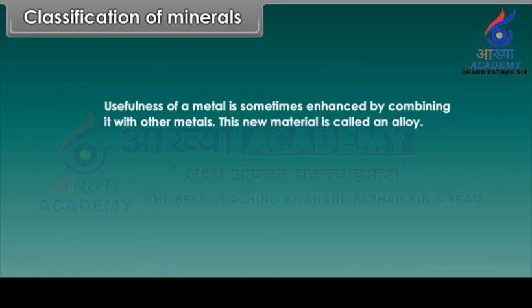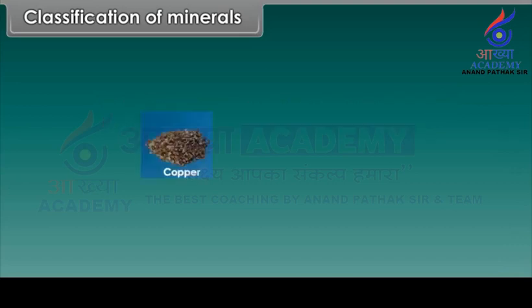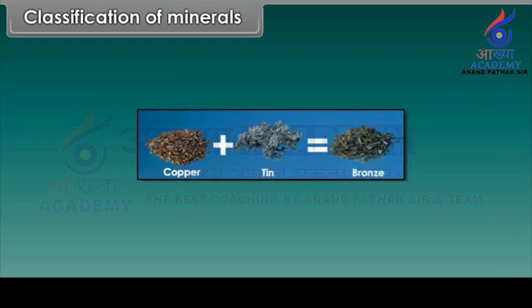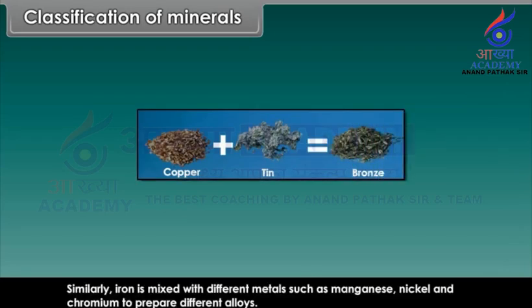The usefulness of a metal is sometimes enhanced by combining it with other metals. This new material is called an alloy. Copper is made stronger by adding tin, and this alloy is called bronze. Similarly, iron is mixed with different metals such as manganese, nickel and chromium to prepare different alloys.